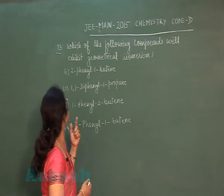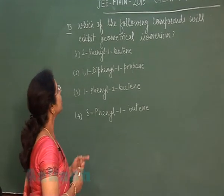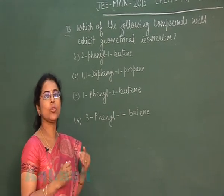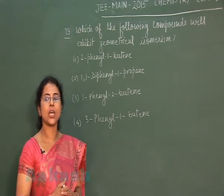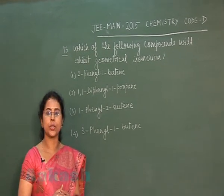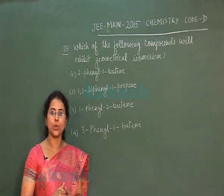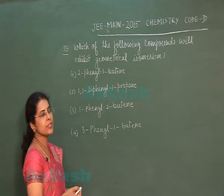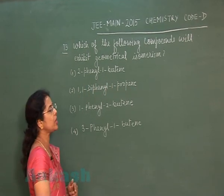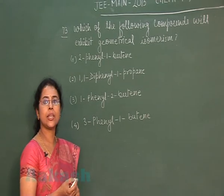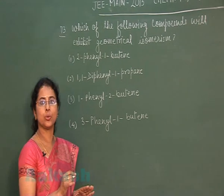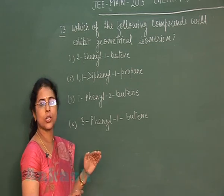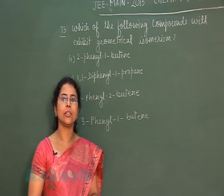Moving to question number 73: Which of the following compounds will exhibit geometrical isomerism? We must remember that geometrical isomerism arises due to restricted rotation, which is possible in compounds having a carbon-carbon double bond. Among the four options, option 1 is an alkene, option 2 is propene — propene does not show geometrical isomerism, so it is omitted. Options 3 and 4 are also alkenes.